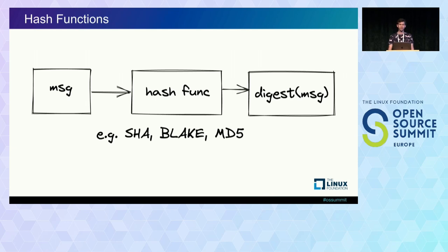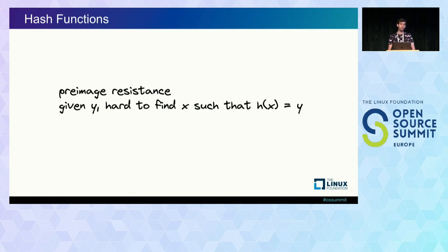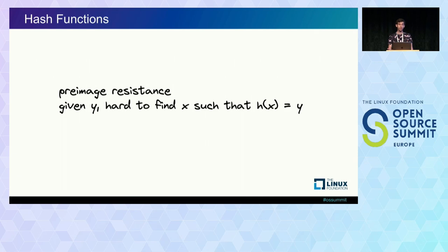Typical hash functions include things like SHA, Blake, or MD5. There are three properties worth bringing up. The first is pre-image resistance: given y, some digest, it's hard to find some value x such that hash(x) = y. This formally defines a one-way function — given some digest, I can't find the underlying message. When I say hard, I mean improbable or infeasible. For example, if a digest is 256 bits long, there are 2^256 possible values, so it's not feasible to enumerate all digests to find some matching message.